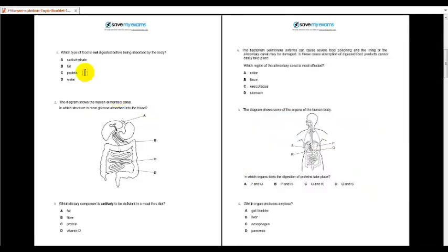First question, which type of food is not digested before being absorbed by the body? The answer is D, water. Next question, the diagram shows the human elementary canal in which structure is most glucose absorbed into the blood. So it is in the small intestine, because this is where the nutrients are being absorbed and transported in the blood.